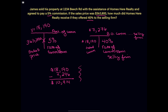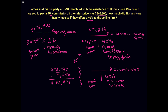As a side note, if you wanted to, you could take these two steps and combine them. If the selling firm is getting 40%, then that means Homes Here Realty is getting 60% of the total commission. So that would be the rate of commission to Homes Here Realty, and this would be the amount of commission to Homes Here Realty, based off of the total commission. Still, that total commission is $18,190, and that gives you the same answer of $10,914.